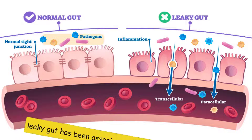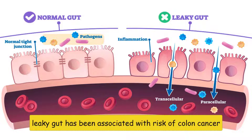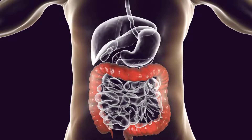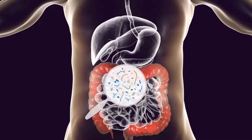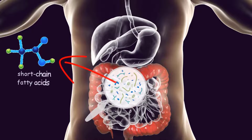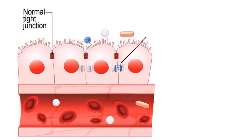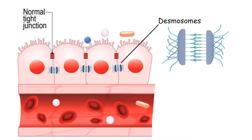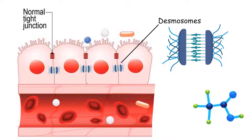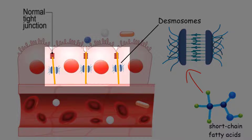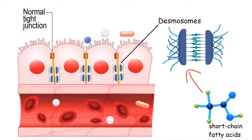Chronic inflammation is linked to cancer growth, and leaky gut has been associated with a risk of colon cancer. But here comes the role of the good bacteria. A standout example is found in the bacteria residing in the digestive tract producing short-chain fatty acids. The cells comprising the digestive tract are interconnected by proteins known as desmosomes. Short-chain fatty acids aid in tightening the spaces between these cells by increasing production of desmosomes, ensuring selective passage of only the appropriate molecules and serving as a safeguard against leaky gut.